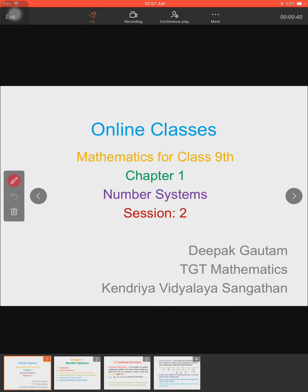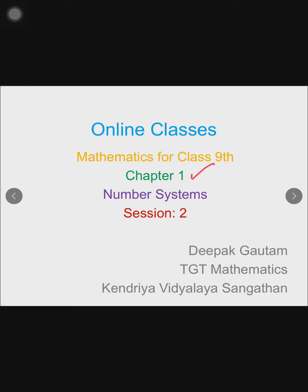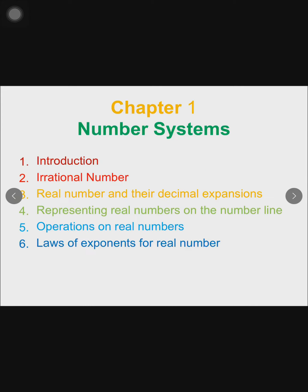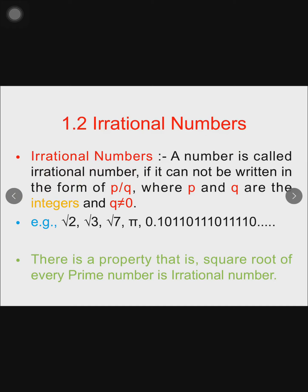Welcome students to the online classes of mathematics for class 9. We are going to do chapter number one, Number System, and we are starting session number two. We have already covered session one, which was the introduction. In this session, we will move ahead with the chapter. I am Deepak Gautam from DGD Mathematics. Today we are going to start the topic: irrational numbers. Let's first see the definition of an irrational number.